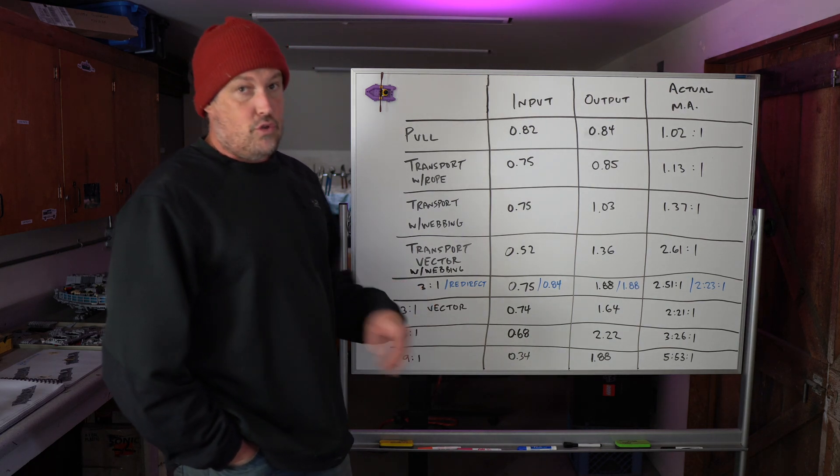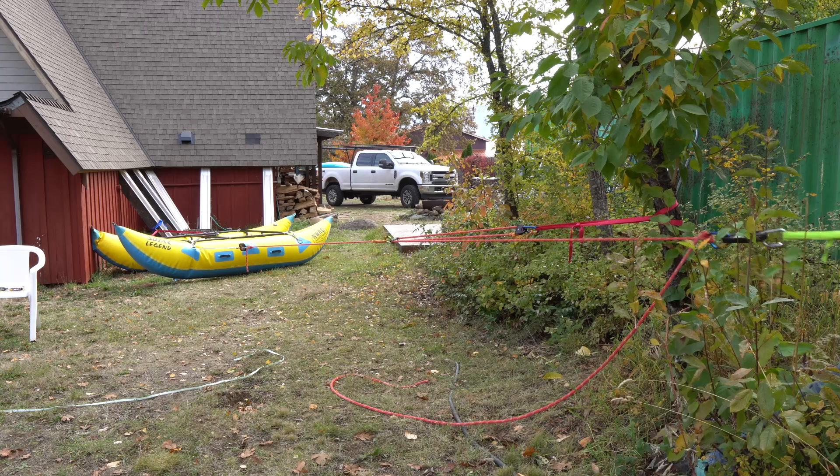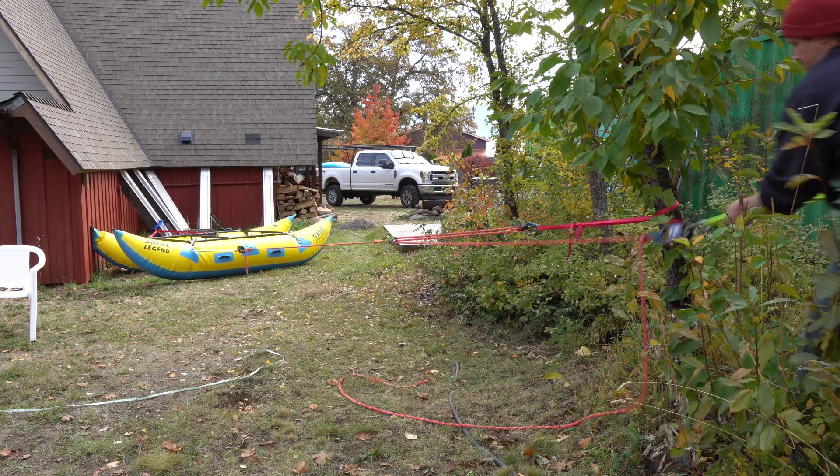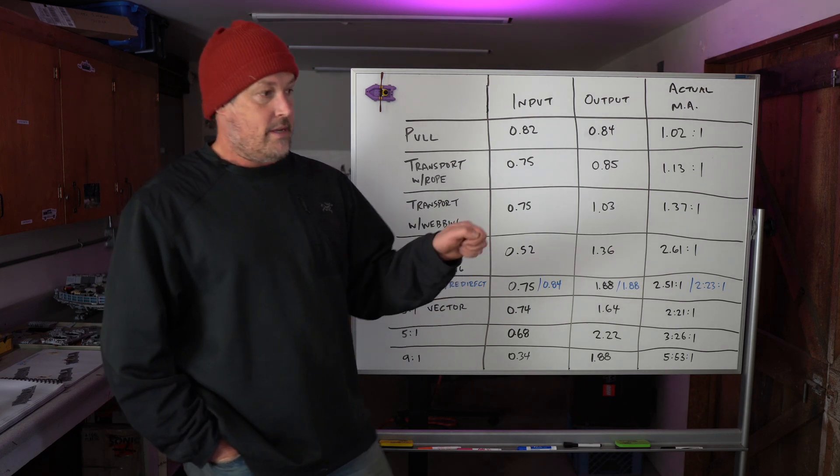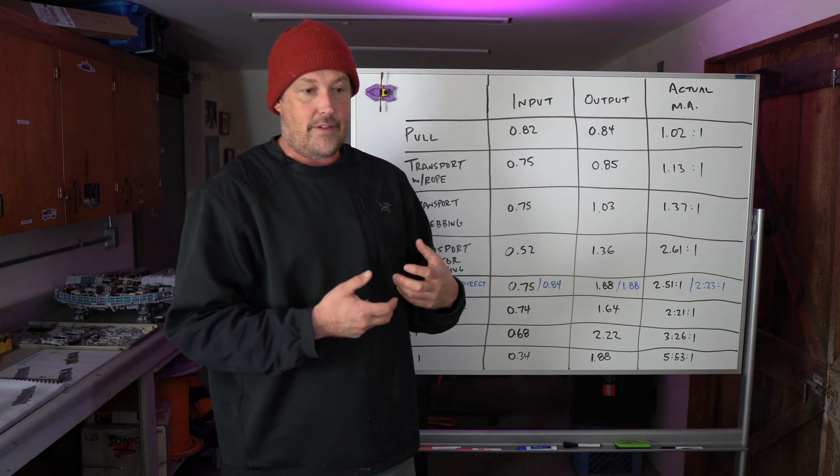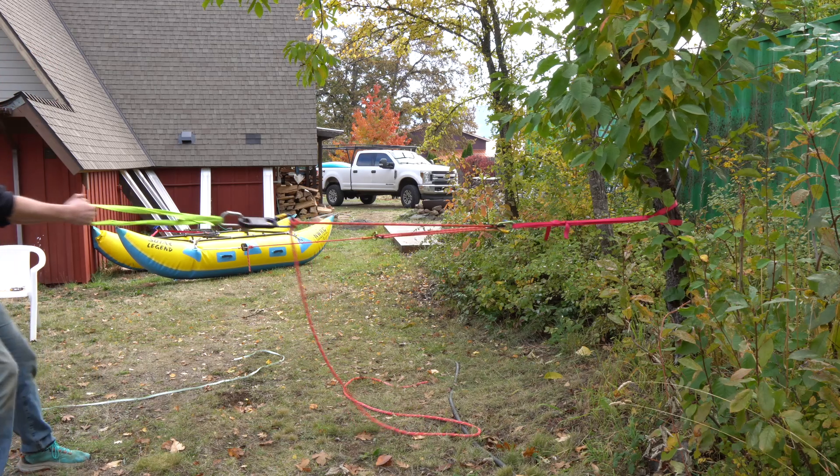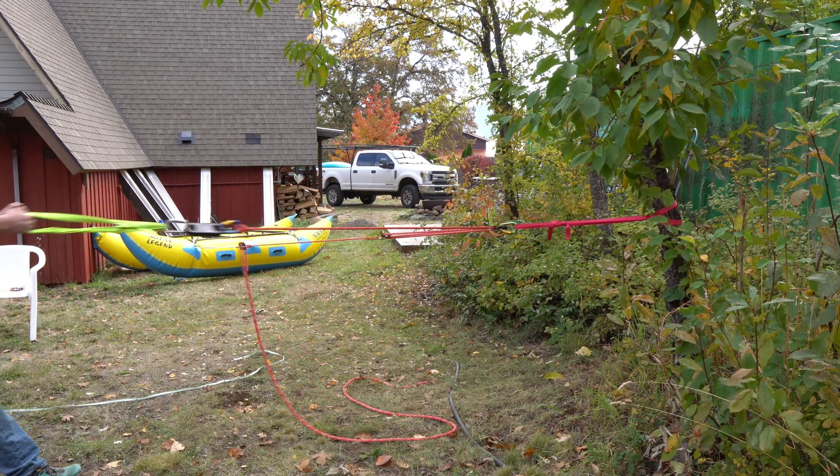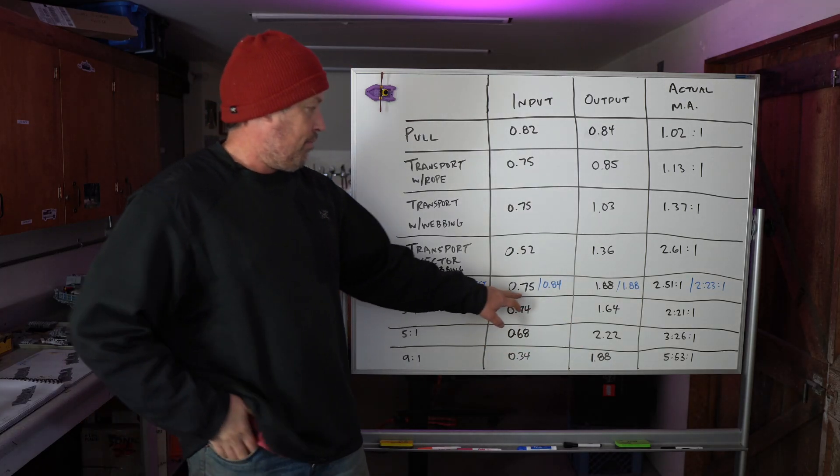Then I did a 3 to 1, just a normal 3 to 1. And I got 2.51 to 1. So a little bit less than the transport vector with the webbing. And I've always wondered how much the redirect affects it. When you're pulling that 3 to 1, you don't want to be in the line of fire of the stuff. And so what if you set up a redirect to stand out of the way? Well, it did affect it. The one thing I noticed was when I was standing in line with the 3 to 1 in the bushes, it was hard to pull a lot. So I only pulled 0.75.